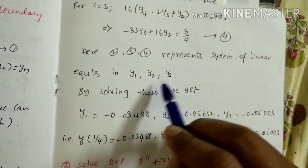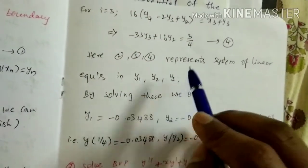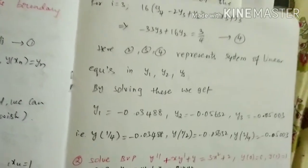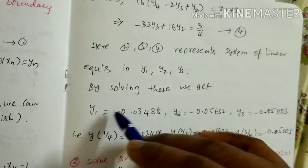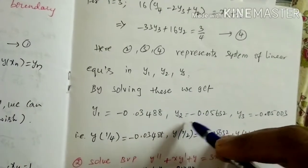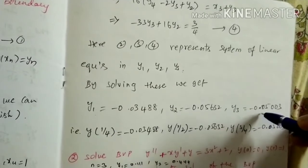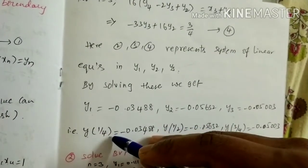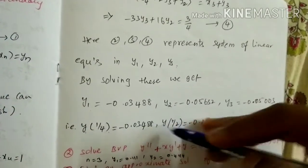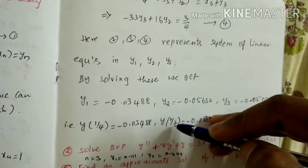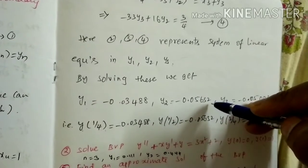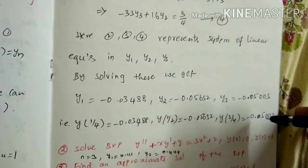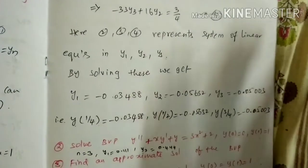This system of three linear equations in three unknowns can be solved very easily. Using a calculator, the values obtained are: y₁ = −0.0348, y₂ = −0.0563, y₃ = −0.0500. In other words, y(1/4) = −0.0348, y(1/2) = −0.0563, and y(3/4) = −0.0500.